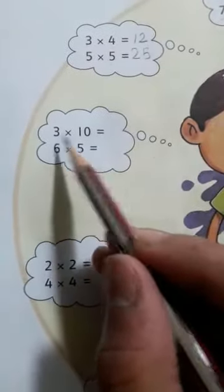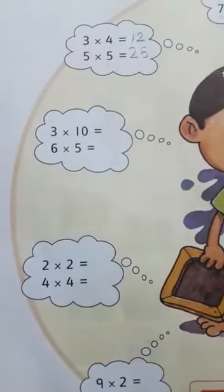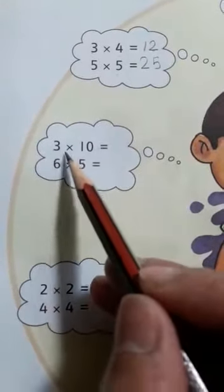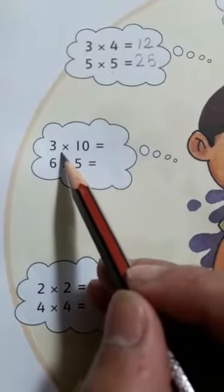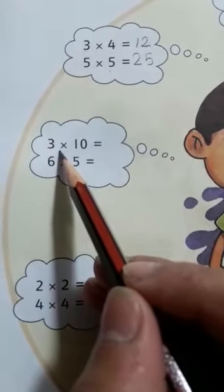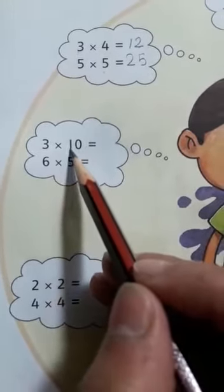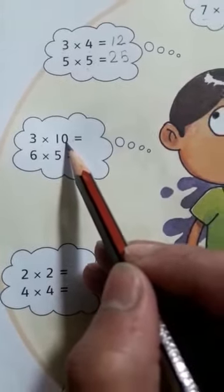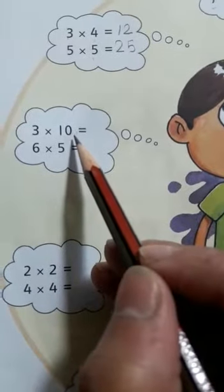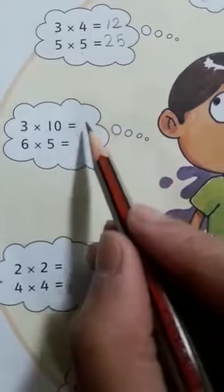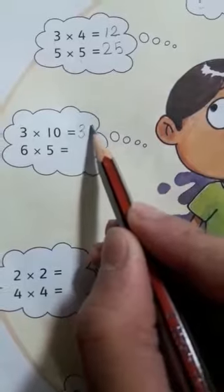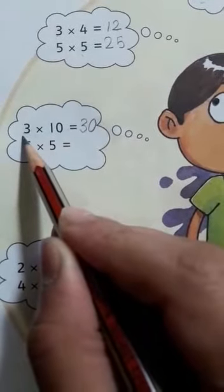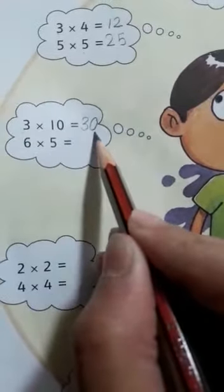Now we will recite 3's table completely. 3 ones are 3, 3 twos are 6, 3 threes are 9, 3 fours are 12, 3 fives are 15, 3 sixes are 18, 3 sevens are 21, 3 eights are 24, 3 nines are 27, and 3 tens are 30. For 10's table: 10 ones are 10, 10 twos are 20, 10 threes are 30.